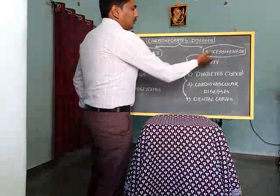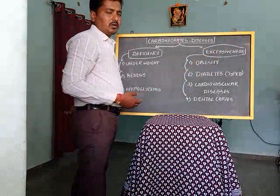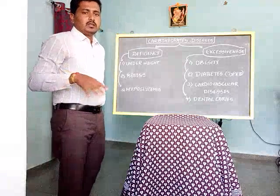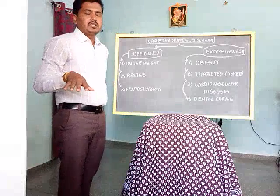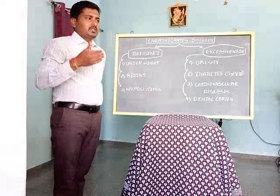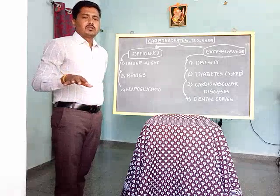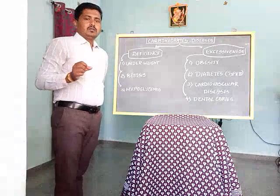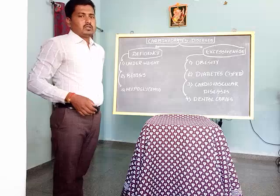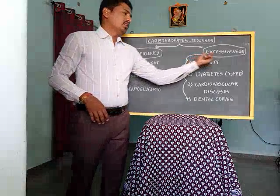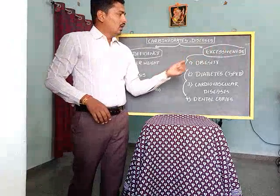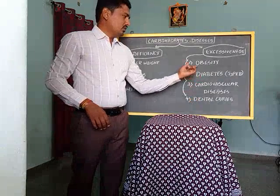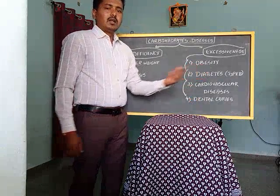Next we jump towards excessiveness of carbohydrate. If carbohydrate consumption is excessive, with no heavy physical activities, a sedentary work style, excessive consumption of alcohol, and adopting a western culture diet, these lead to excess carbohydrates. Among the disorders of excessiveness, there are: first, obesity; second, diabetes; third, cardiovascular disease; and fourth, dental caries.